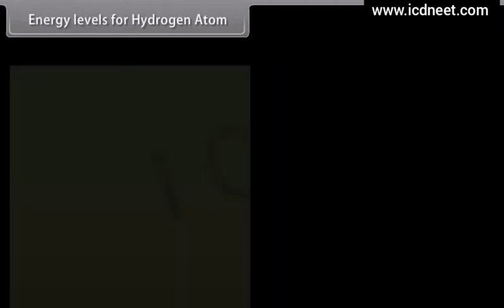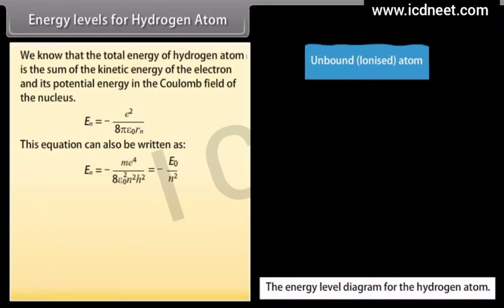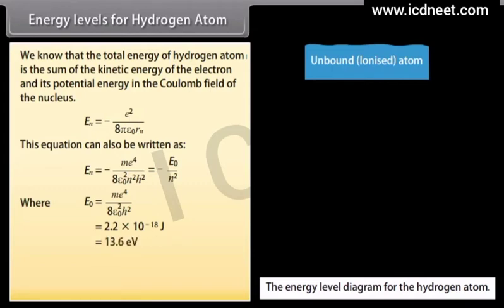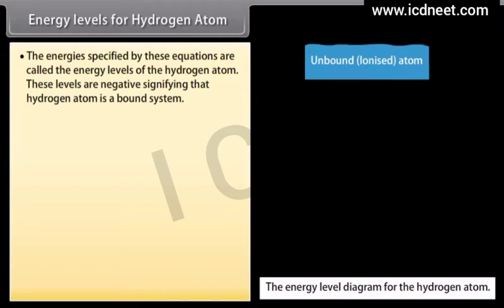The total energy of the hydrogen atom is the sum of the kinetic energy of the electron and its potential energy in the Coulomb field of the nucleus: En = −e²/(8πε₀Rn). This can also be written as En = −me⁴/(8ε₀²n²h²), where E₀ = me⁴/(8ε₀²h²) equals 2.2 × 10⁻¹⁸ joule, which equals 13.6 eV. Thus En = −13.6/n² eV. The energies specified are called the energy levels of the hydrogen atom, and they are negative, signifying that hydrogen is a bound system.